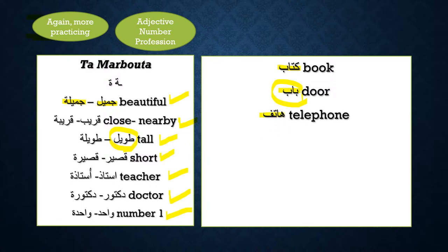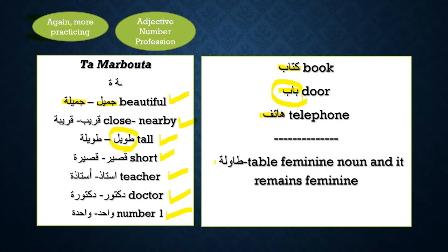'Hatif' — is hatif an adjective, number, or profession? If the answer is no, then hatif is a masculine noun and you cannot make hatif feminine. 'Tawila' is a feminine noun — can I make tawila masculine? Ask yourself three questions. If tawila is not an adjective, not a number, not a profession, then tawila is a feminine noun and it remains feminine. This is what I covered at 101 level — the easiest way to distinguish between ta marbuta and ha and when you can add or remove ta marbuta. Now let's see more rules.